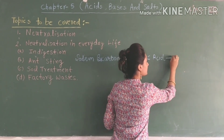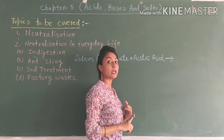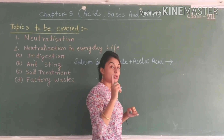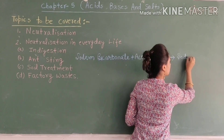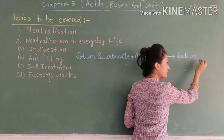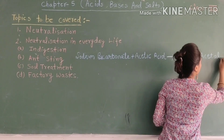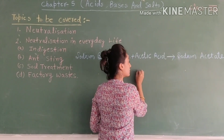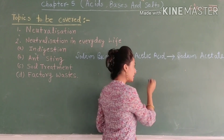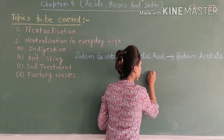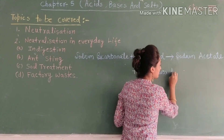When base and acid react, we get a product. The salt formed is sodium acetate, and the other products are carbon dioxide and water.